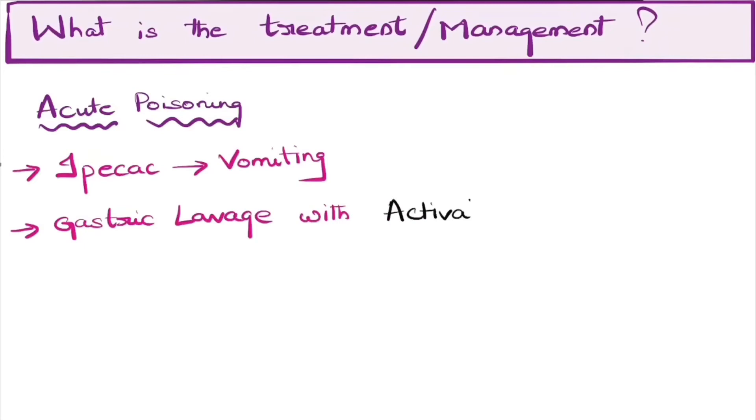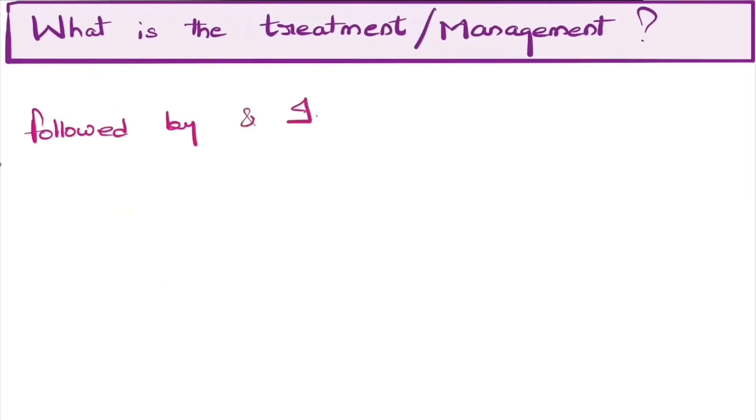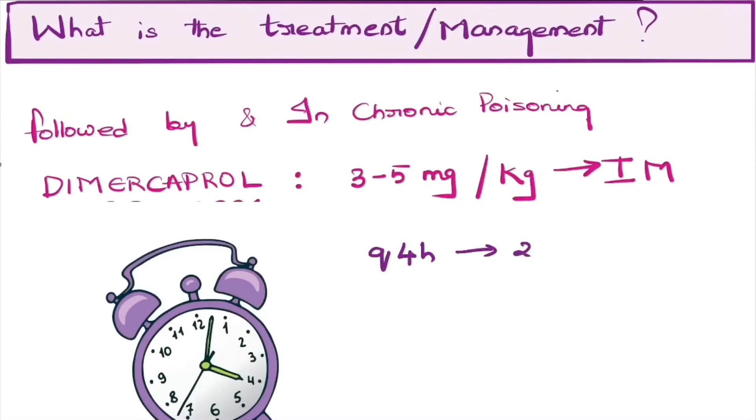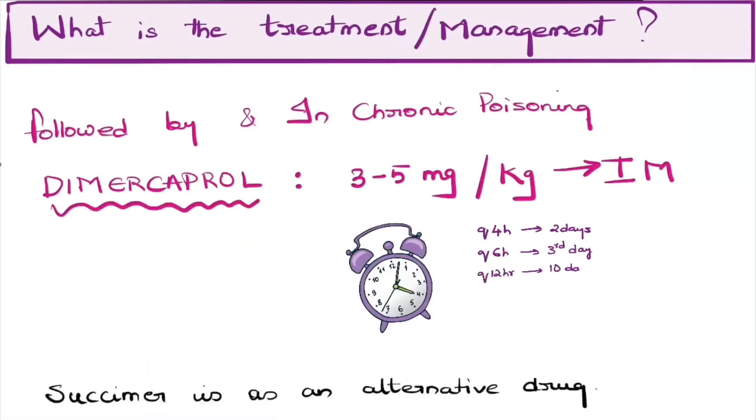Later perform gastric lavage with activated charcoal and cathartic so that absorption of further arsenic can be stopped. Patient should be given supportive care, and for chronic poisoning cases as well as acute poisoning cases, dimercaprol at a dose of 3 to 5 mg per kg body weight is given intramuscularly every 4 hours for the first 2 days, followed by every 6 hourly injection on the 3rd day, and every 12 hourly IM injection of dimercaprol for the following 10 days. Succimer is a choice of drug if dimercaprol is not available.